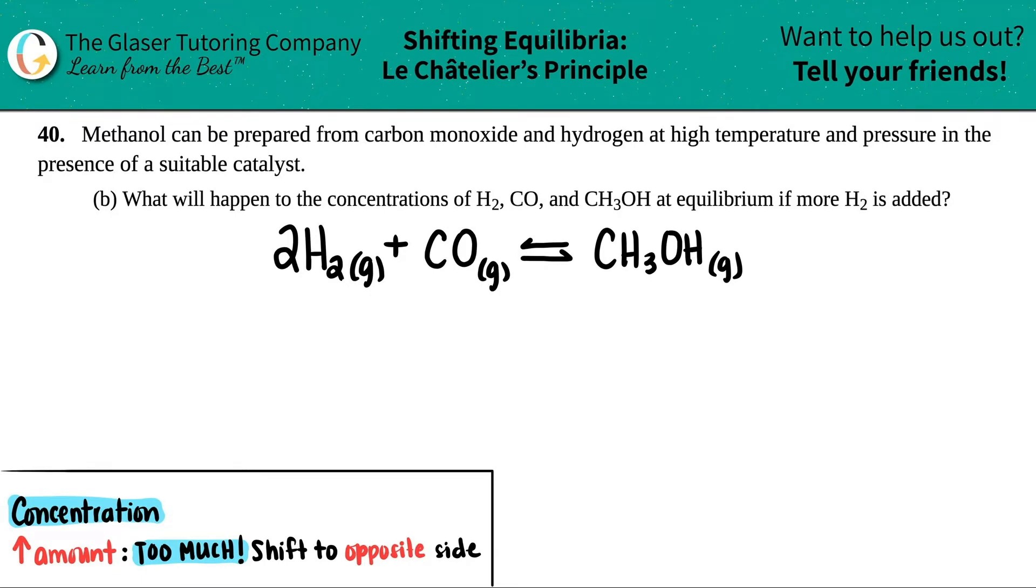Number 40, methanol can be prepared from carbon monoxide and hydrogen at high temperature and pressure in the presence of a suitable catalyst. And then we have letter B, what will happen to the concentrations of H2, CO, and CH3OH at equilibrium if more H2 is added?